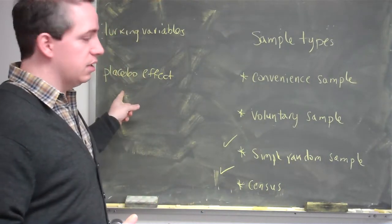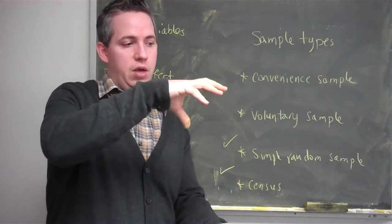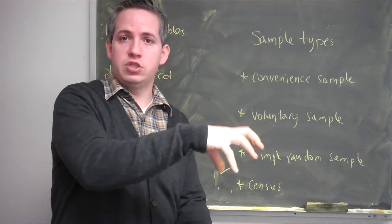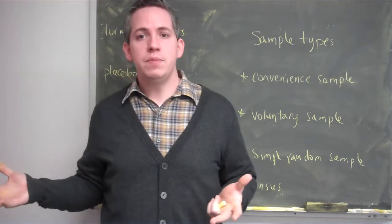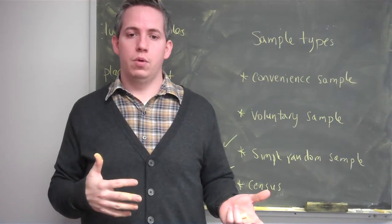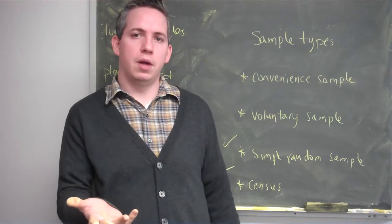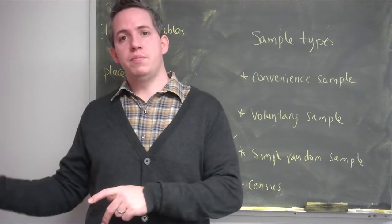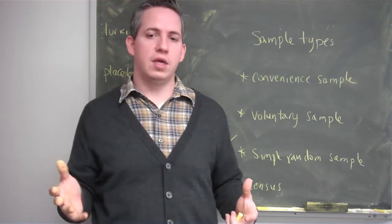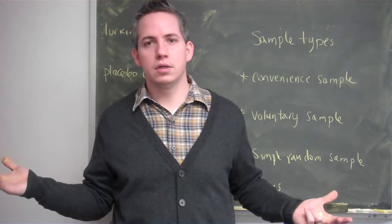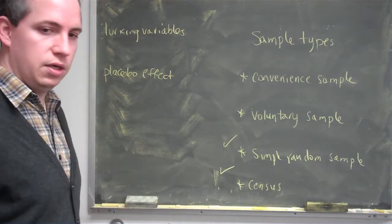To get the placebo effect out, what we end up doing is we try to have the control group and the treatment that we actually want and then compare the results. If 50% of those that took Tylenol got rid of their headache while only 10% of those that took the placebo got rid of their headache, then we say Tylenol probably works. But if 50% of Tylenol patients got rid of their headache and 50% of placebo patients got rid of their headache, we would say that Tylenol doesn't really work. It's just a placebo effect that they're probably actually feeling. That's something we might want to get out of our study.